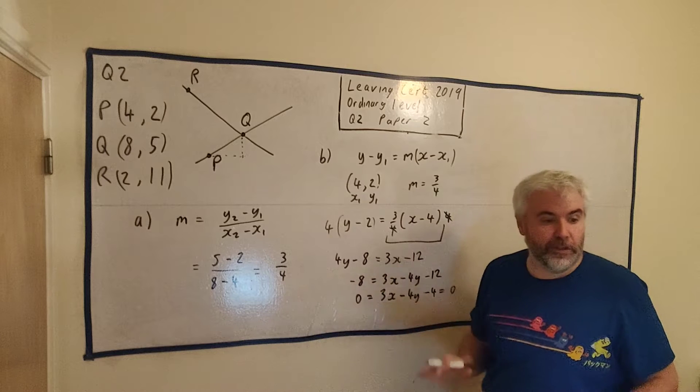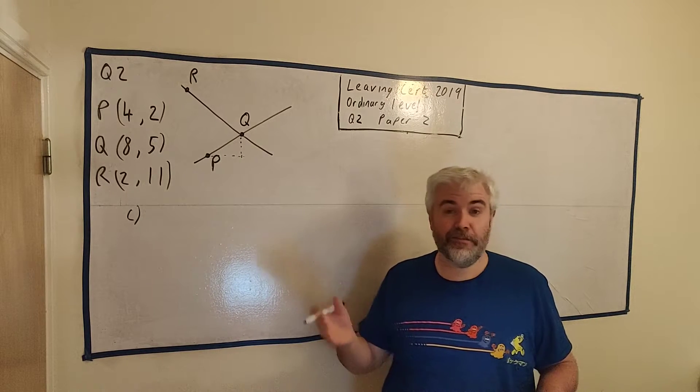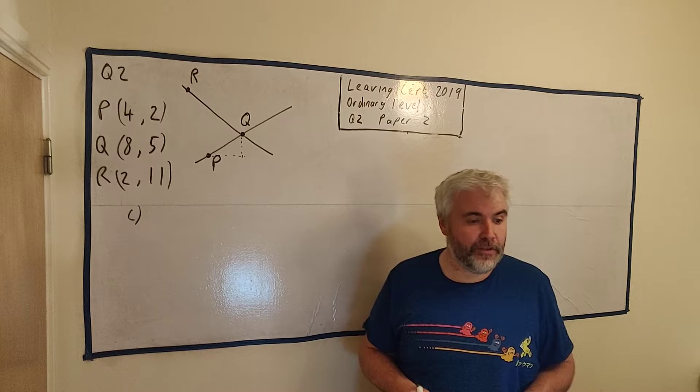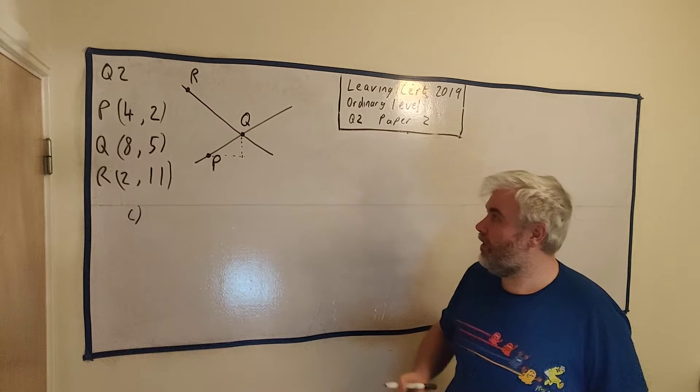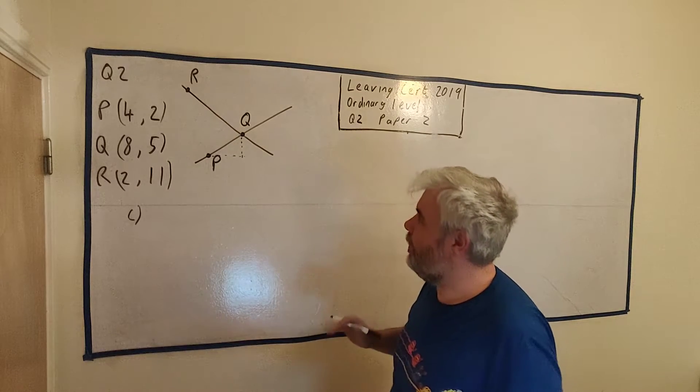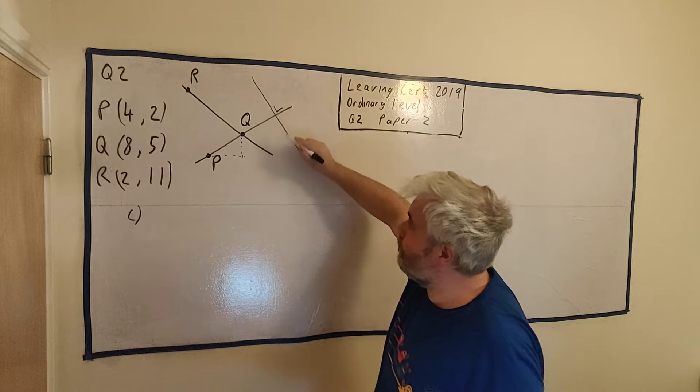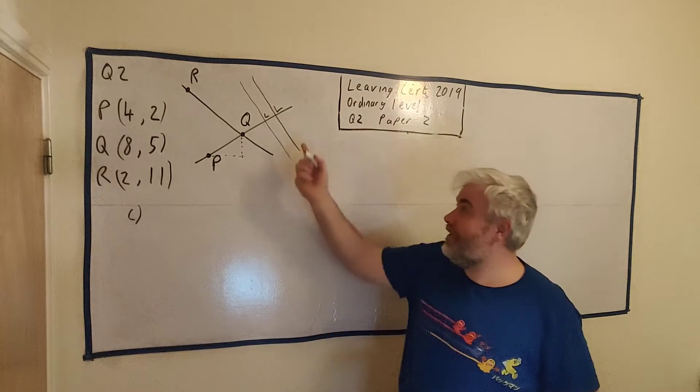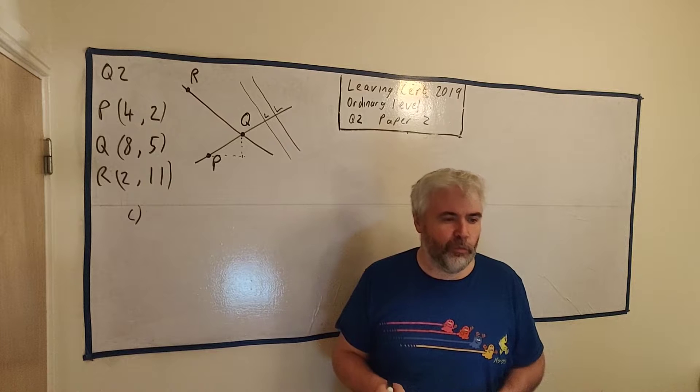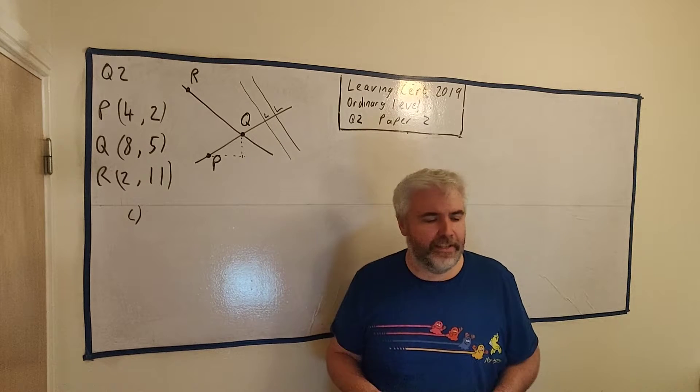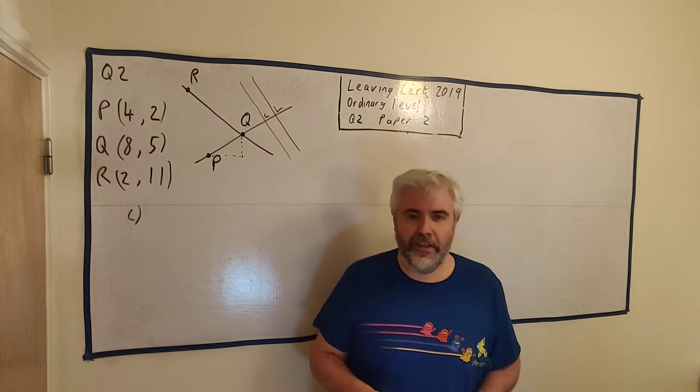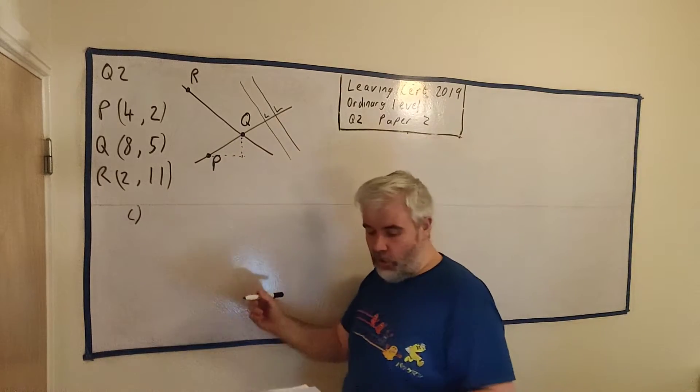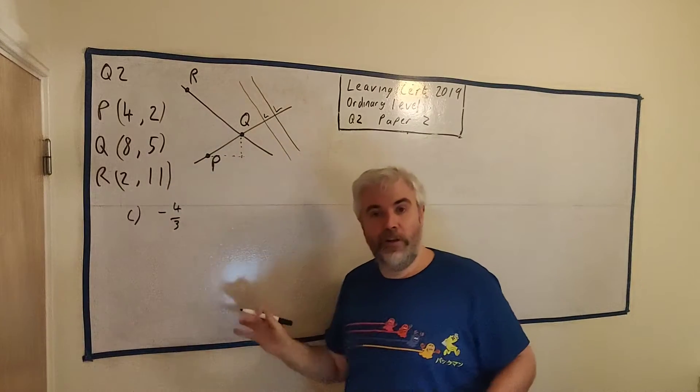Part C asks us to write down the slope of any line perpendicular to PQ. They want any line that's perpendicular. They ask you to write down, not to figure it out or prove it. That's giving you a clue that you're able to write down the answer.